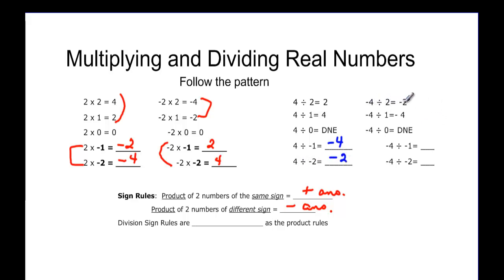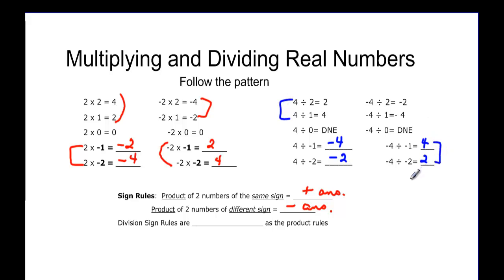4 divided by negative 2 should be negative 2. Negative 4 divided by 2 is negative 2, just like 4 divided by negative 2. Negative 4 divided by 1 is negative 4. You can't divide by 0, so it does not exist. Negative 4 divided by negative 1 would be positive 4, and negative 4 divided by negative 2 would be positive 2. So the division sign rules are the same as the multiplication rules: same signs give a positive answer, opposite signs give a negative answer.